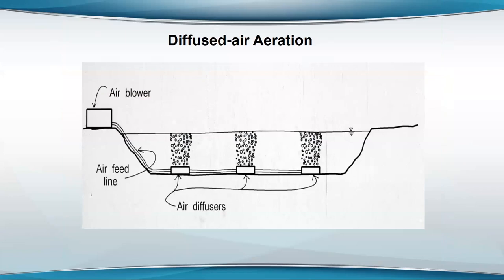Diffused air aeration systems use an air blower to release oxygen through an underwater diffuser. A big problem is that the water depth is usually not great enough for the bubble hang time to allow much oxygen transfer — they may only transfer one or two percent of the oxygen in the bubble. Those are not very efficient generally, but if you've got a deeper tank, they are. Diffusers are nice because you can use one device to power many individual units.